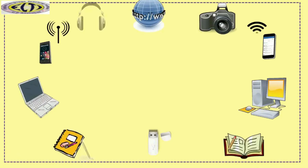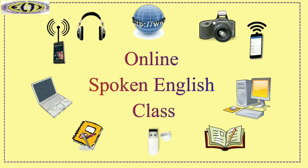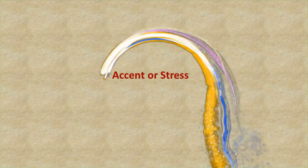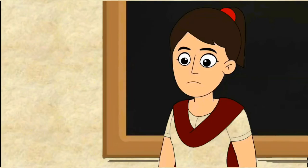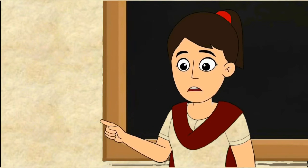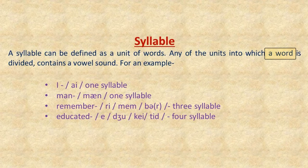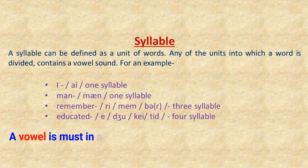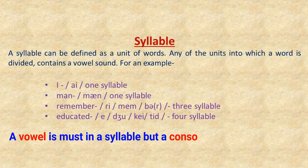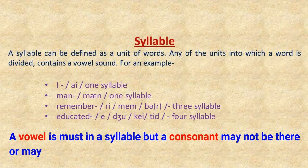Hello friends, welcome to online spoken English class. Today we will discuss one of the important features of English speech — that is accent, or we can say stress. Before discussing accent, I would like to discuss syllable. A syllable can be defined as a unit of words — any of the units into which a word is divided. It contains a vowel sound.